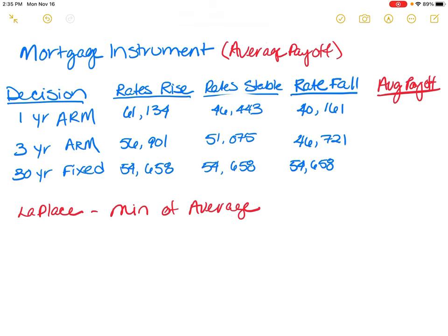If I averaged out the rates rise, rates stable, and rates fall for each one of these scenarios — one-year ARM, three-year ARM, and 30-year fixed — for the one-year ARM we would get $49,246. For the three-year ARM we would get $51,566. And then for the 30-year fixed, it's going to be the same: $54,658.